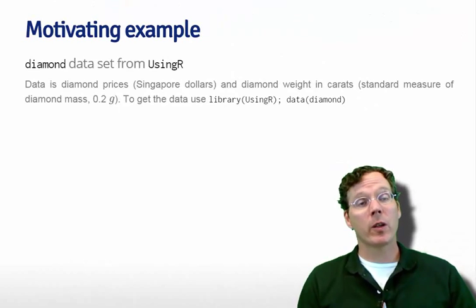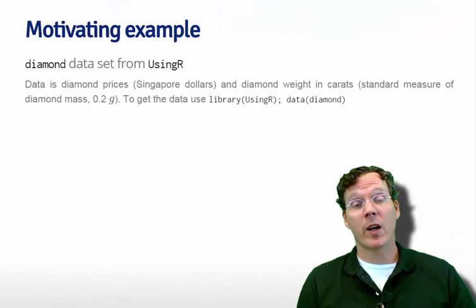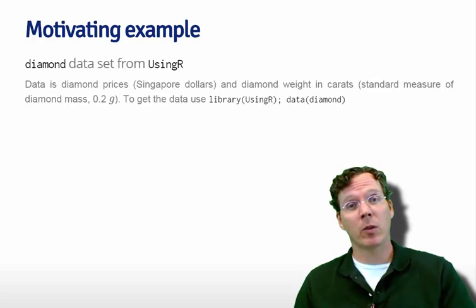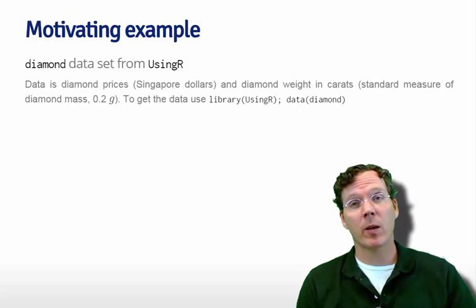Let's start by talking about our motivating example using the diamond dataset. Remember, in this dataset the diamonds were diamond prices in Singapore dollars, and the explanatory variable is the weight of the diamond in carats.